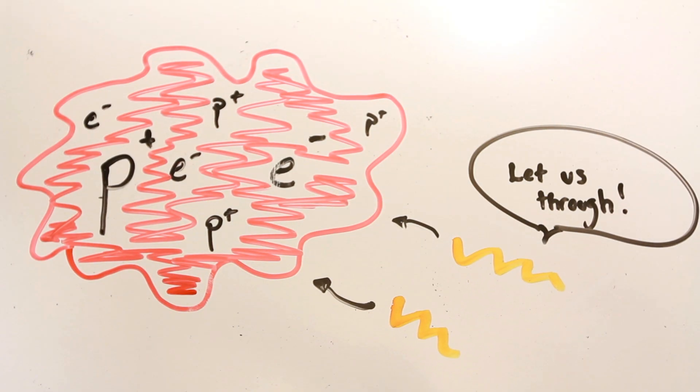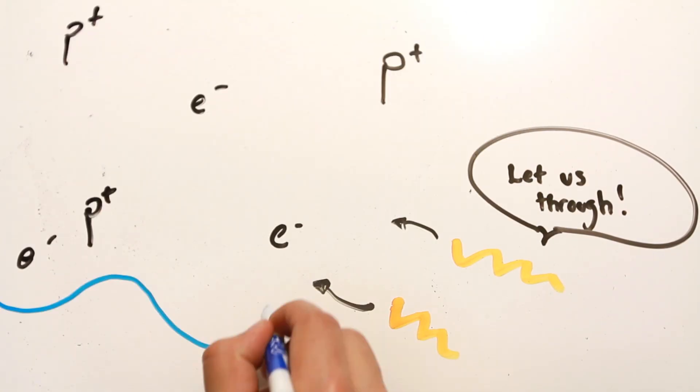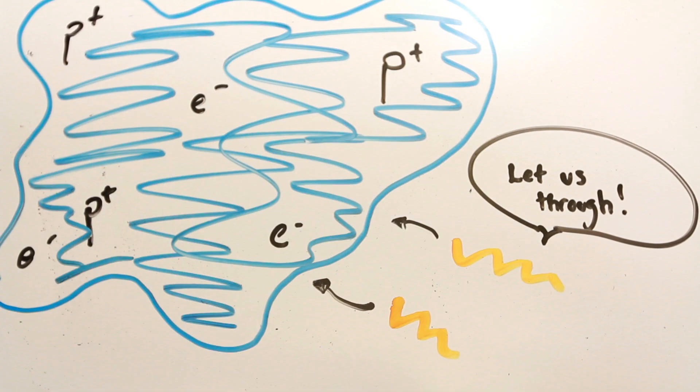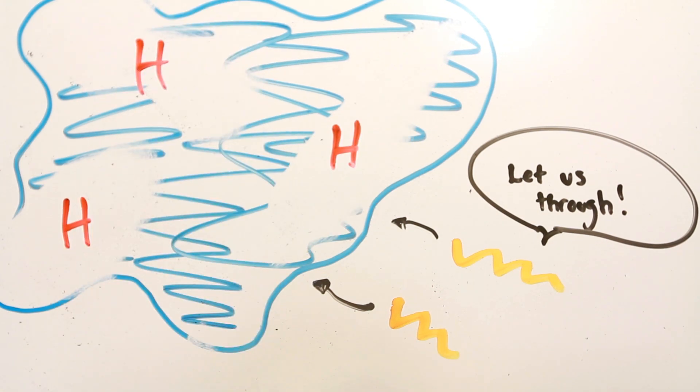Over time, as the universe expanded, all the plasma that filled up its space began to cool. As it cooled, it reached a point at which the electrons and protons could unite to form hydrogen, which is electrically neutral.